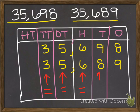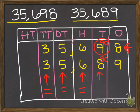Now I move over to the tens column. I notice here that the numbers are different, so I can compare them. The nine in this number is 90, and the eight in this number is 80 because it's in the tens place. I know that the nine in the tens place is greater. So I automatically know that the top number, 35,698, is the larger number, and I can complete my comparison: 35,698 is greater than 35,689.